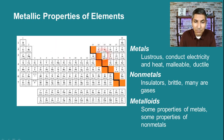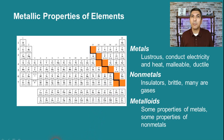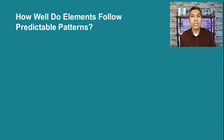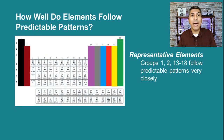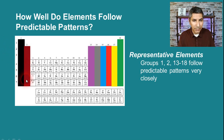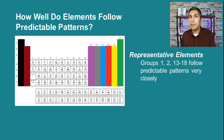Notice that the elements touching that stair-step line are the metalloids, except for aluminum and polonium which are full-fledged metals. So we can classify elements by period and group, by metals/non-metals/metalloids, and a third way is by how well they follow predictable patterns. There are eight groups on the periodic table that follow predictable patterns very closely — we call these the representative elements. That includes groups 1 and 2 on the left side and groups 13 through 18 on the right side. These are sometimes called main group elements.